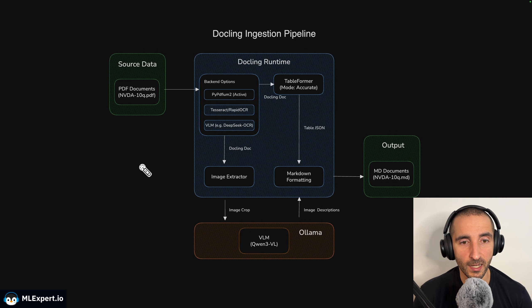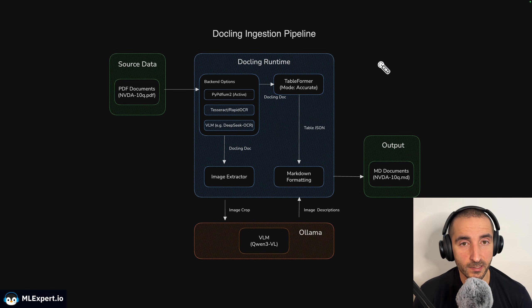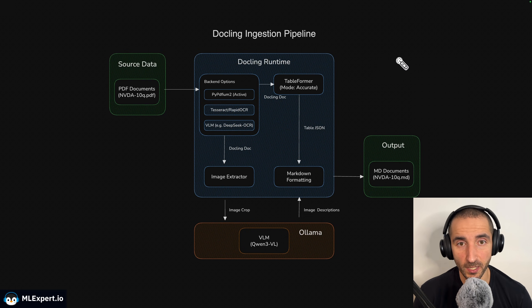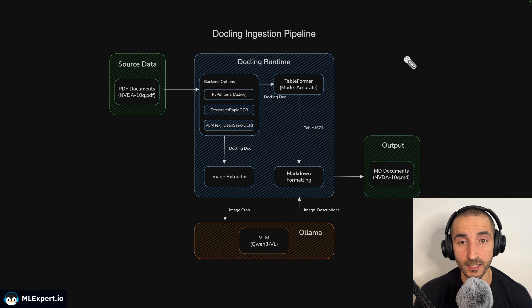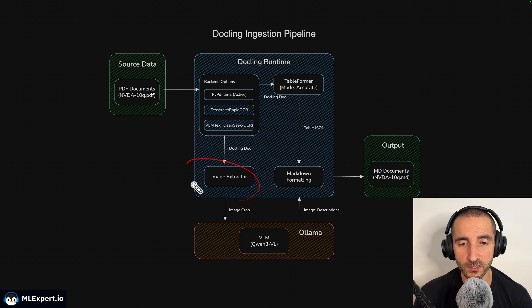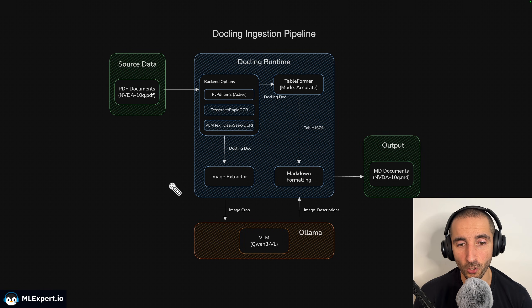Then we're going to be using a table transformer model that is provided by Docling, and with this transformer model we're going to be able to get much higher accuracy for our table extraction. Since we are going to be focusing on financial documents, these are going to be very important since those documents are pretty table heavy. The last component is going to be image understanding. Most of those documents will contain some types of charts and other images, and we're going to be using an image extractor within the Docling library.